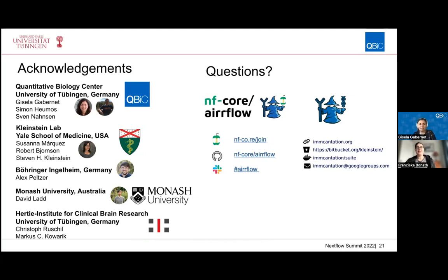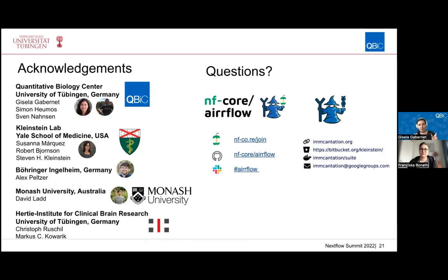Thank you very much. Are there any questions from the audience? In what format does Airflow expect UMIs to be provided — in a separate file, in read one, or in read two? It supports all of these configurations. Depending on your library design, UMI barcodes can be part of the R1 and R2 reads or part of the index reads. There are parameters in the pipeline where you can specify where the UMI barcode is located — R1 read, R2 read, or index files — so everything is supported.